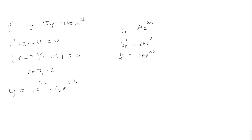The second derivative, 4a e to the 2t, minus 2 times the first derivative, 2a e to the 2t, minus 35 times y, which is a e to the 2t, must equal 140 e to the 2t.